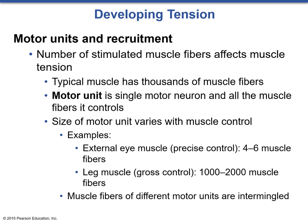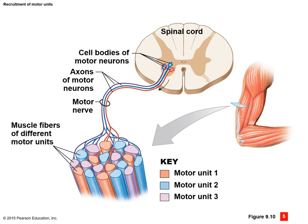The muscle fibers of different motor units are intermingled throughout. For example, in the tricep there are three different motor units. Motor unit 1's motor neuron innervates all of its designated muscle fibers. All fibers within a given motor unit are of the same type—if one is Type 1, they all are. They can transition into different fiber types, but all fibers in the unit will transition together. When a motor neuron is activated, it activates all muscle fibers under its control simultaneously.